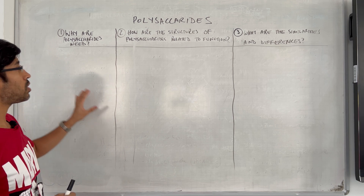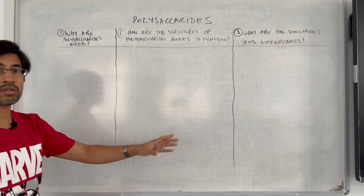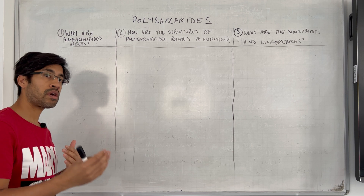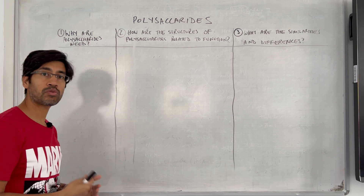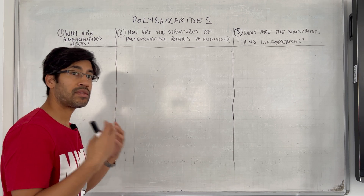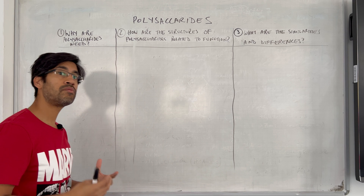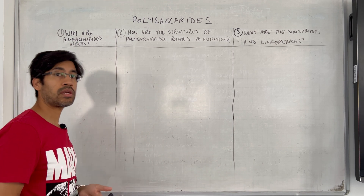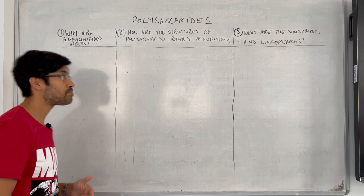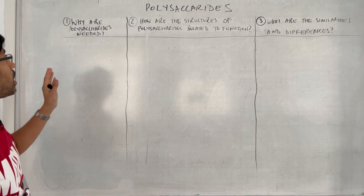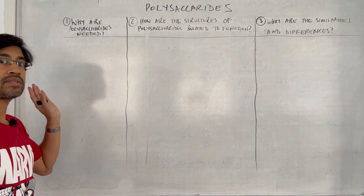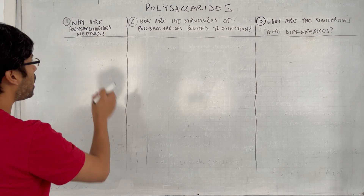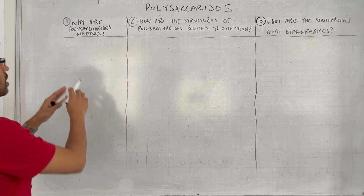We'll stick to the bare essentials and answer three questions. After that, the idea is that you repeat answering those questions for yourself and see how that improves your learning of the content and your application of content. Let's get to work. First question: why are polysaccharides needed?